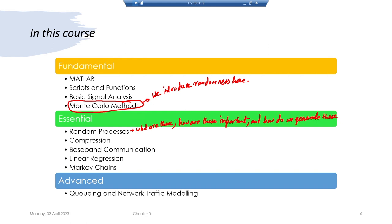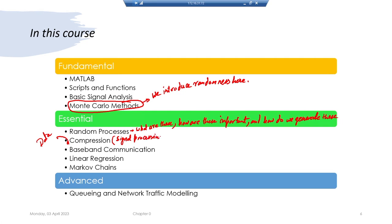We will cover what random processes are, why they are important, and how to generate them. Once we have modeled random processes, we will touch upon data compression — specifically signal processing models for lossy data compression. We will mainly talk about text, speech, and video but also give a general insight into how compression works. We won't cover the information theory aspects of lossy compression — you may want to visit an information theory course for that.